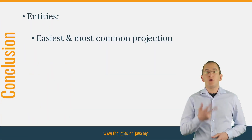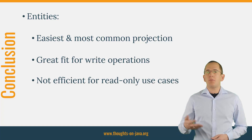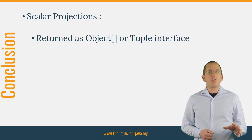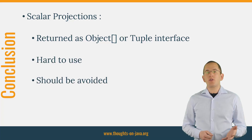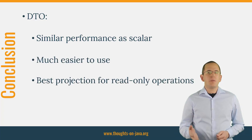JPA and Hibernate support 3 groups of projections. Entities are the easiest and most common projection — a great fit if you need to change data, but not the most efficient for read-only use cases. Scalar projections are returned as object arrays or instances of the tuple interface. Both versions don't provide any type information and are hard to use, so even though they are very efficient for read-only operations, you should avoid them in your application. DTO projections provide similar performance as scalar value projections but are much easier to use, making them the best projection for read-only operations.